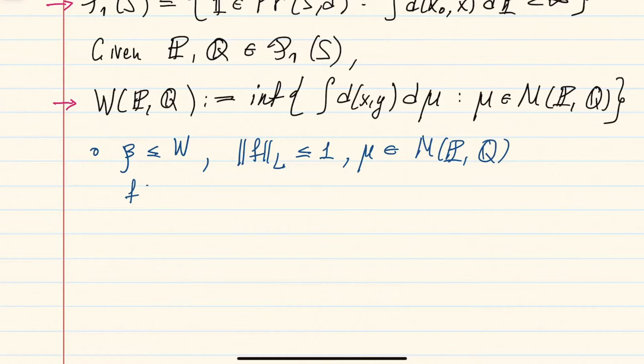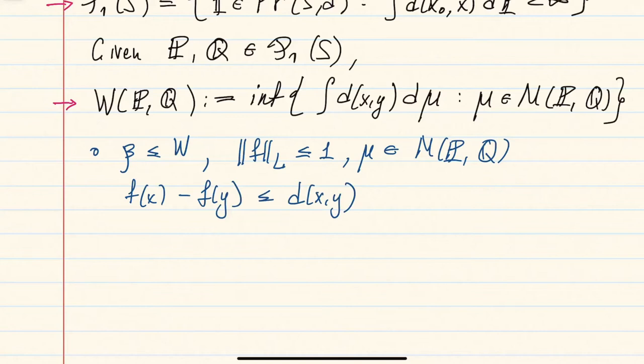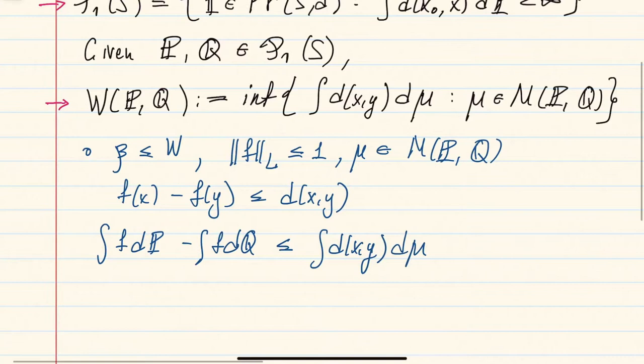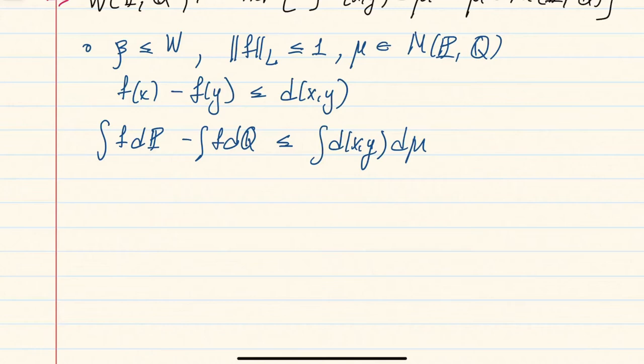Using the Lipschitz condition, we can write that f(x) − f(y) is bounded by the distance between x and y. Integrating both sides with respect to mu, on the left-hand side we get the integral of f with respect to p minus the integral of f with respect to q, and on the right-hand side we get the integral of d with respect to mu. This holds because the marginals of mu are exactly p and q, and the inequality holds for all choices of f and mu as above.